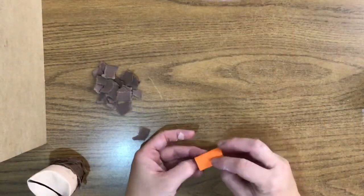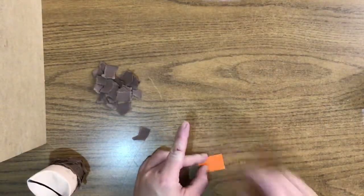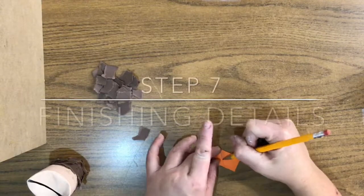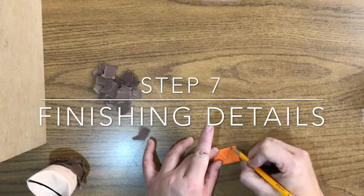The rest of the details to the owl with an orange sheet of paper. You're going to fold it in half and you're going to draw a little triangle coming from the top edge.